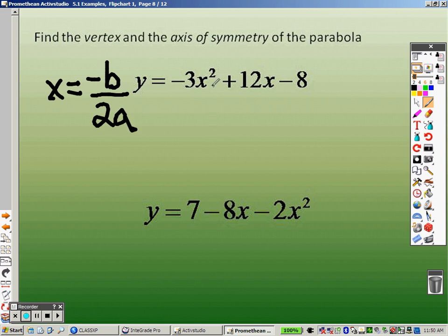So, this is in order, which is the first step. This right here is your a. This right here is your b, and this is your c. So, plugging it into the formula, it's negative 12, because that's b, over 2 times your a, which is negative 3.